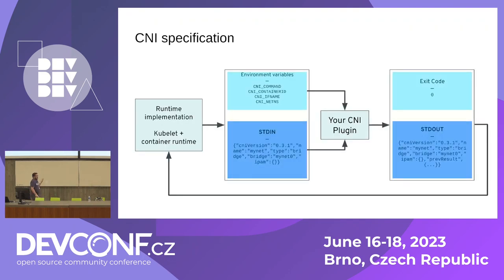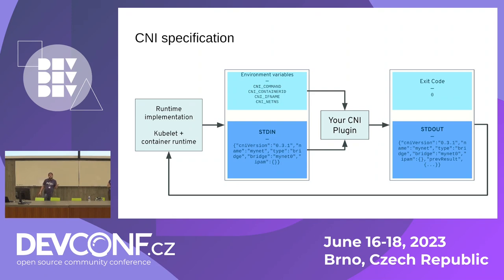Out of those four primitives, most CNI plugins you'll see only implement two: CNI add and del. That means: give me a port, delete that port. The spec only expects to read a JSON config file and some environment variables from the system, execute the binary, and give you a result. The environment variables include CNI command, network namespace, interface name, and container ID.